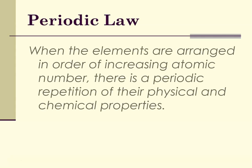What is Periodic Law? Periodic Law states that when the elements are arranged in order of increasing atomic number, there is a periodic repetition of their physical and chemical properties. Spoiler alert — know this definition, it will show up on tests. This is why it's called the Periodic Table, because there is a periodic repetition of both physical and chemical properties.